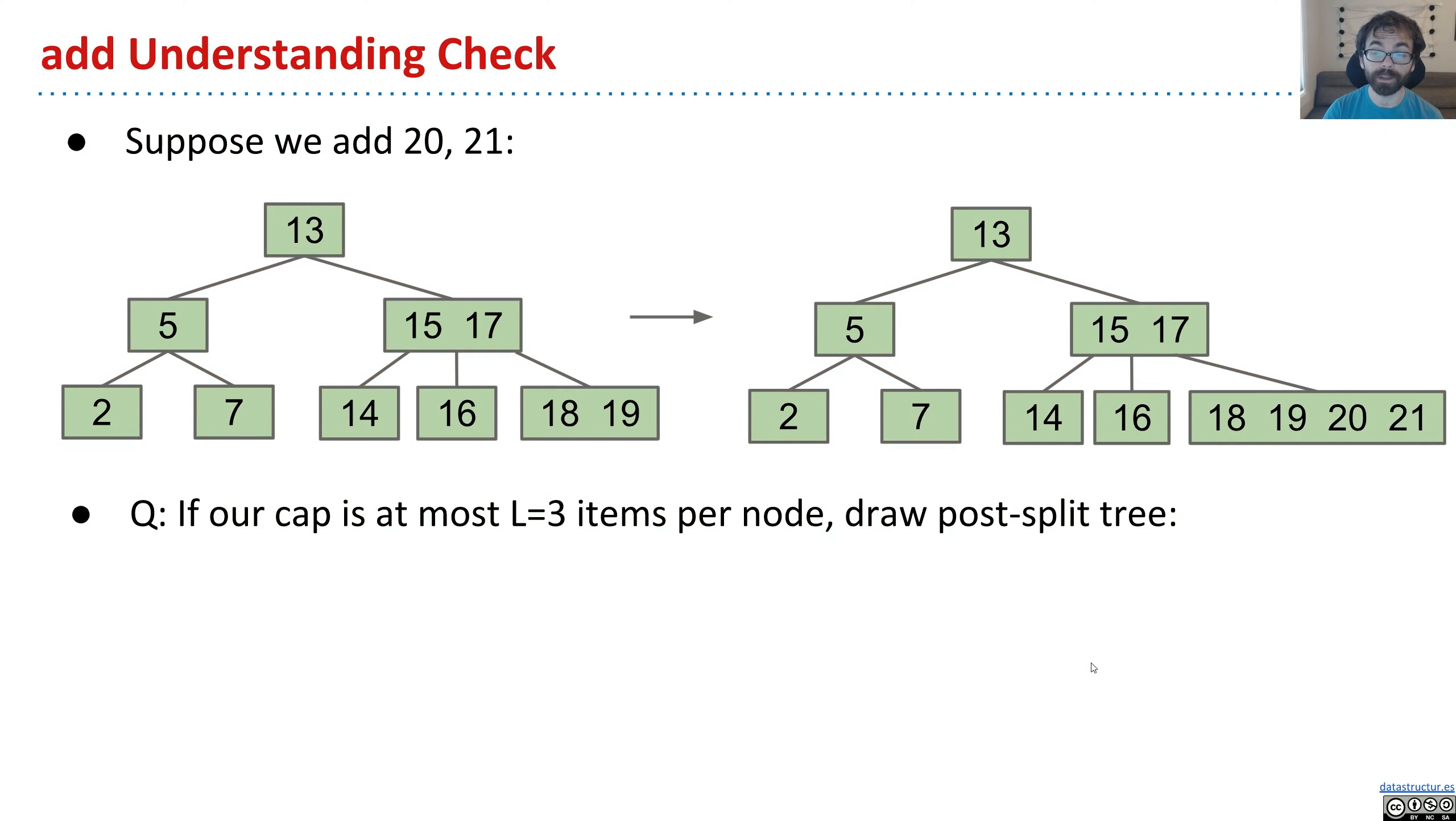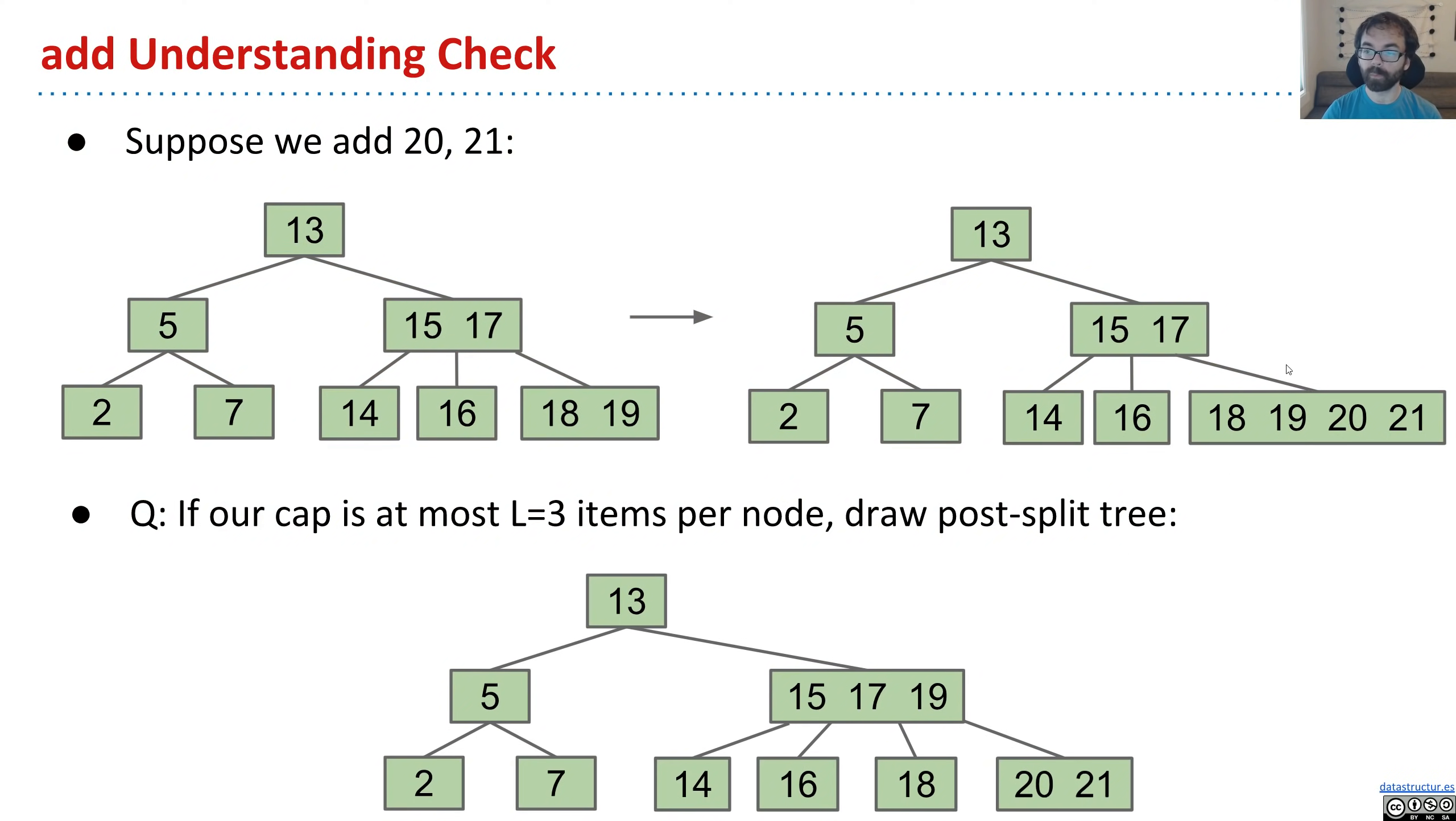And the most natural choice, I think, is that when 18 splits apart from 20 and 21, that this node will now have four children, everything to the left of 15, everything between 15 and 17, everything between 17 and 19, and everything greater than 19. And so that's the core idea behind a B-tree.